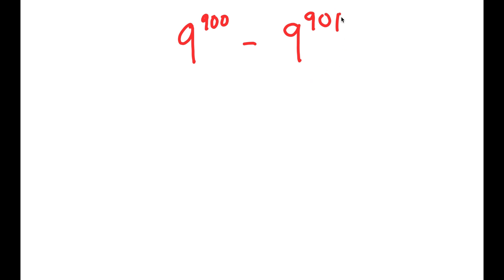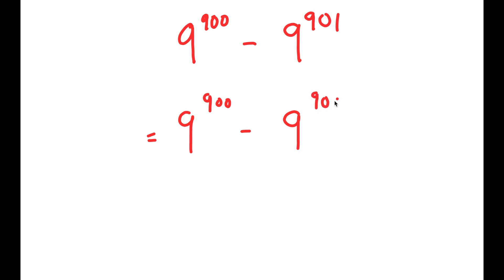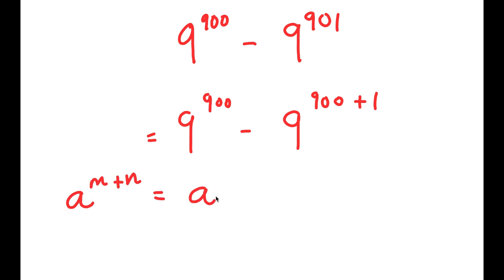What I'm going to do is rewrite 9 to the power of 901 as 9 to the power of 900 plus 1. The reason I'm doing this is so I can use the property: a to the power of m plus n is equal to a to the power of m times a to the power of n.